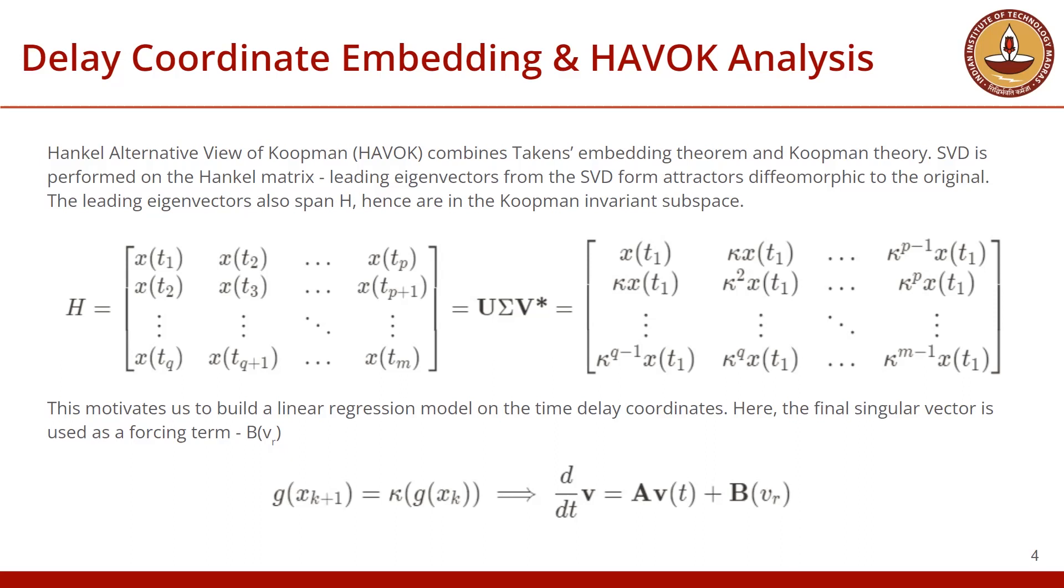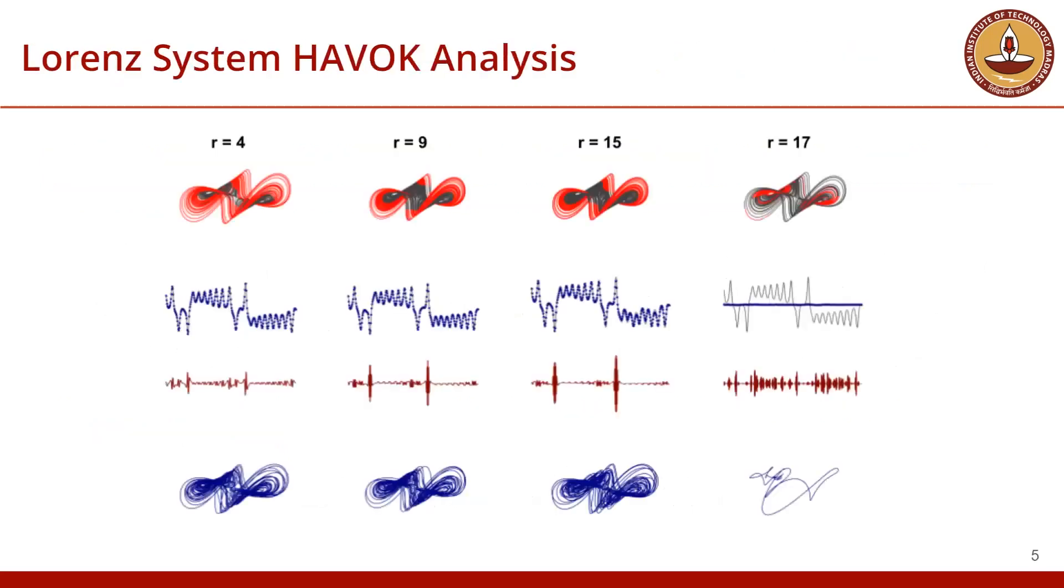One final note is that even if we get an approximation of an operator like that, we still cannot predict a chaotic attractor precisely. Therefore we introduce a forcing in this model that helps us predict rare events like bursting, lobe switching and so on in a better way.